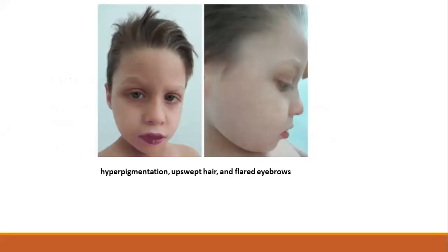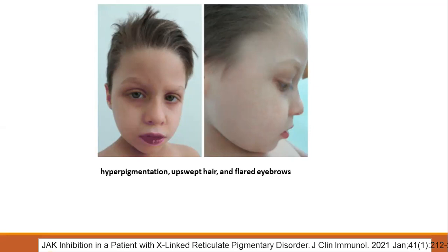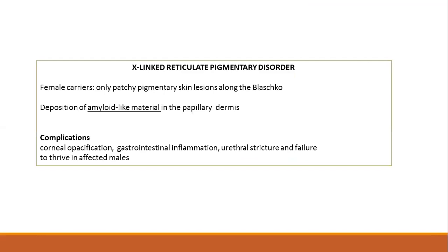This is a very interesting and classical photograph of a pigmentary disorder. Imagine this patient has got a reticulate disorder on the body, and look at the patient's face — upswept hair and flared eyebrow, with pigmentation in the body. That is X-linked reticulate pigment disorder. It's an unusual case report where they found a JAK inhibition defect. Very interesting. In females, you just see lesions on the lines of Blaschko; biopsy shows amyloid. This is a condition that has got complications: corneal opacification, GI inflammation, and a host of other things. So important to diagnose this early, especially in males where it's very obviously seen.